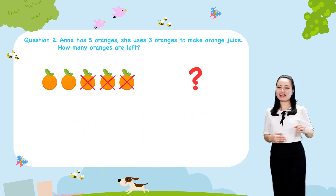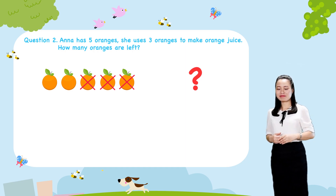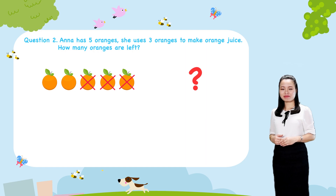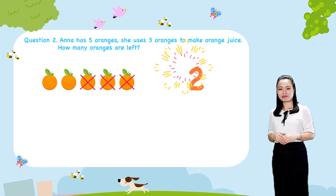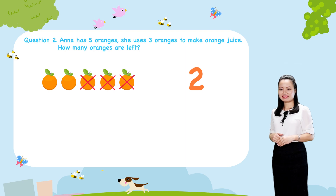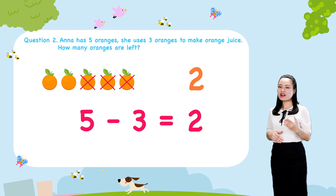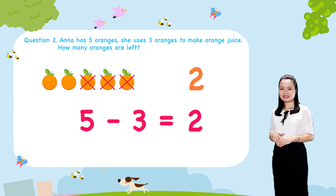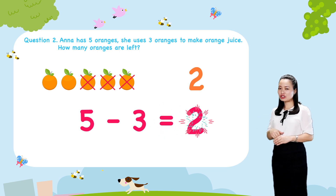Let's find the answer together. You can see, Anna has one, two — two oranges are left. We write in numerals. We say: five minus three equals two.